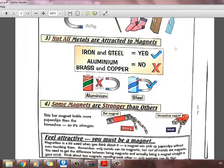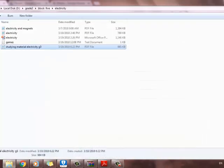Some magnets are stronger than others. These bar magnets hold more paper clips than the horseshoe magnet. That's why it's more powerful. Let's now move to the presentation.